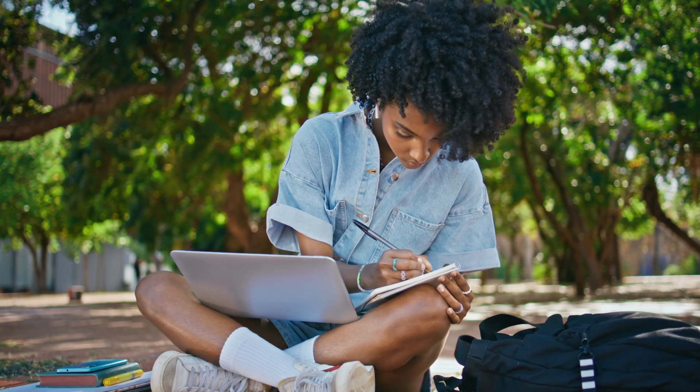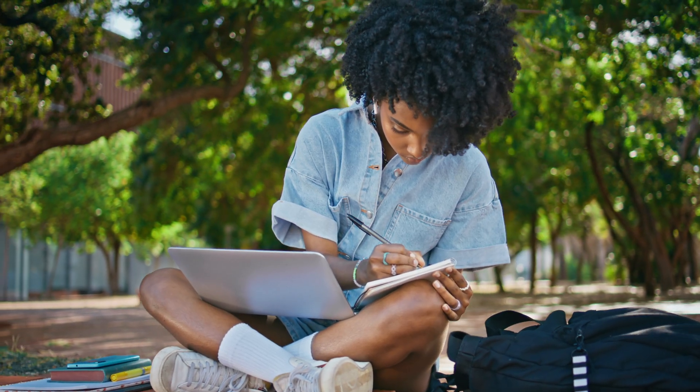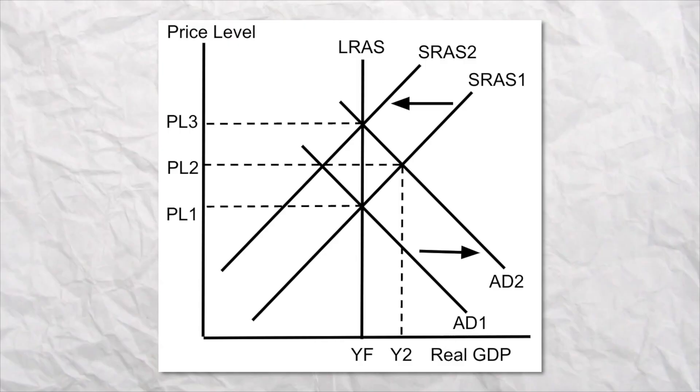Hey, how you doing econ students? This is Jacob Clifford. In any macroeconomics class, you have to be able to draw and shift aggregate demand and supply. So here are five tips to help you on your next quiz, unit exam, or the final exam.